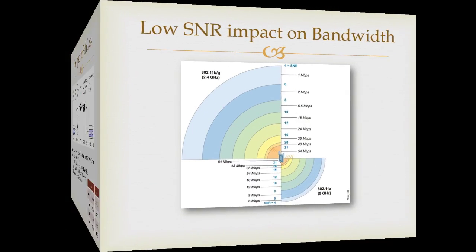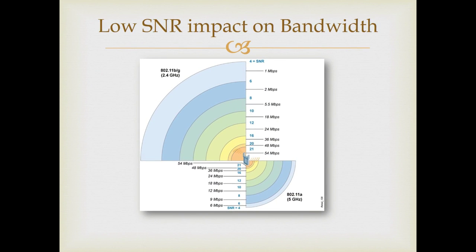This next graphic shows us how noise impacts our available bandwidth. If the current noise level was at minus 90 dB and the signal strength was at minus 80 dB, that would give us a signal-to-noise ratio of 10, which means we could only expect about 5.5 megabits of bandwidth.